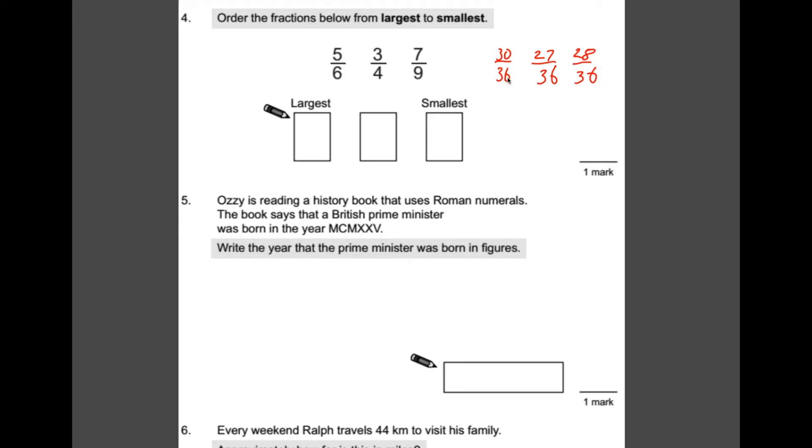And now, we can compare them because we've got the same denominator. So, our largest one would be 30 over 36. However, we need to order these fractions. So, we need to remember, that's why I've done them in order, which one is which. So, 5 sixths was 30 over 36. So, that is the largest one, 5 sixths. The next one is 28 over 36. So, that's 7 ninths. And finally, the smallest is 27 over 36, which is 3 quarters.